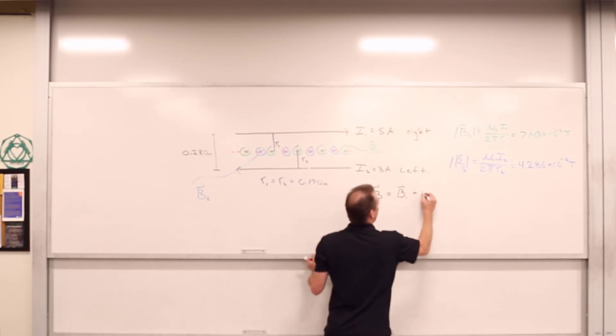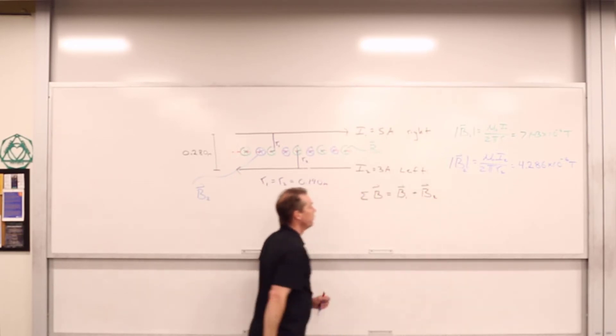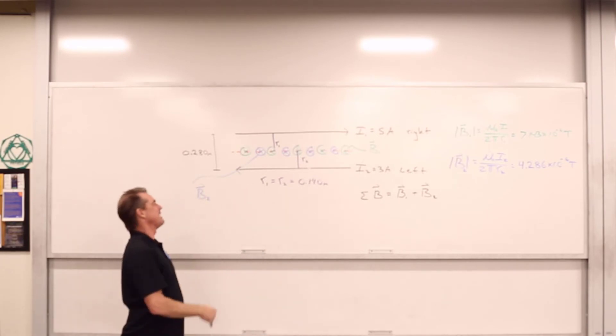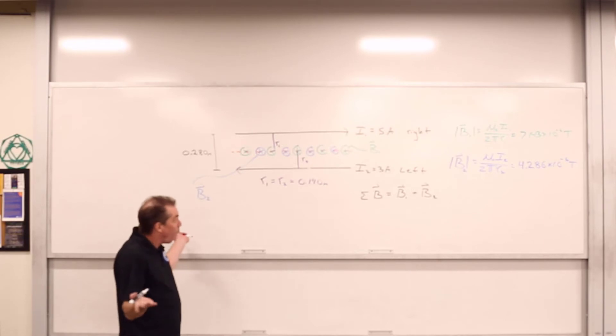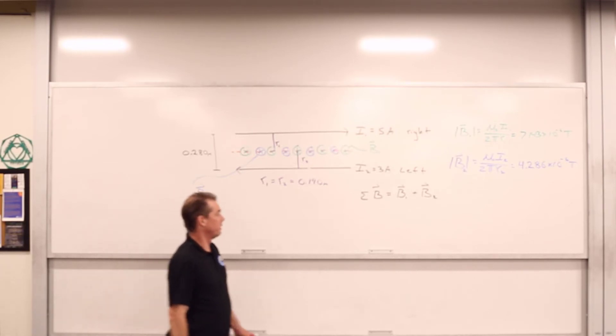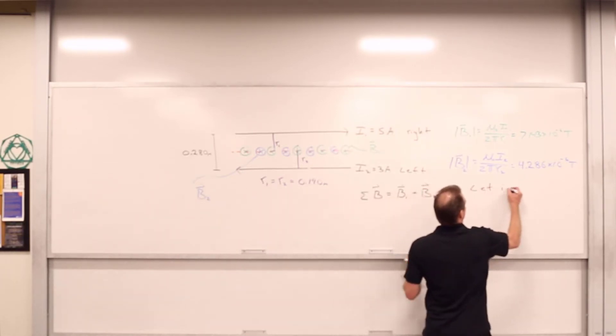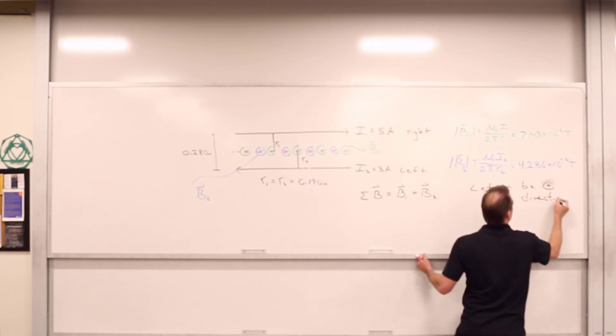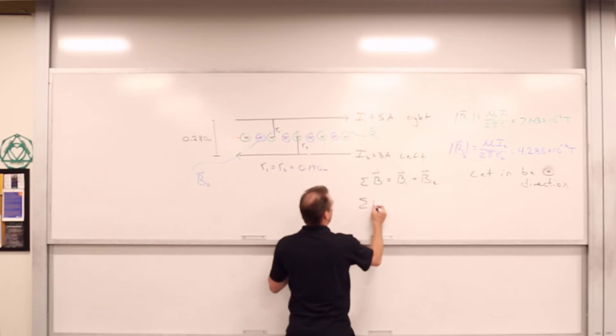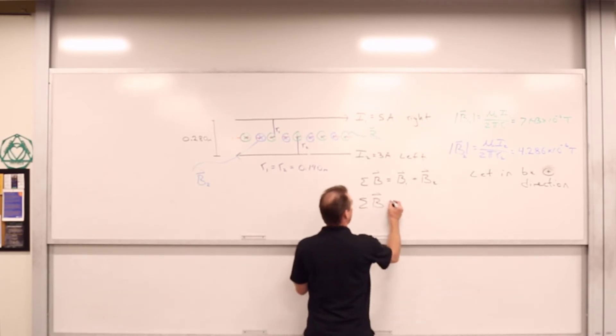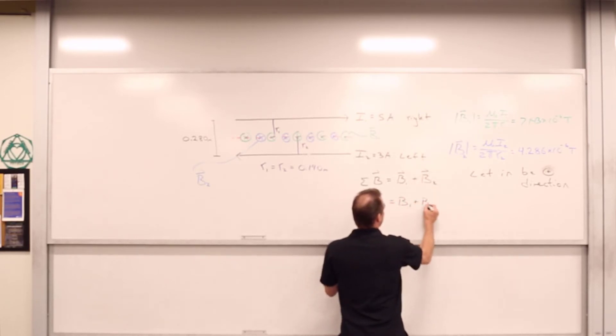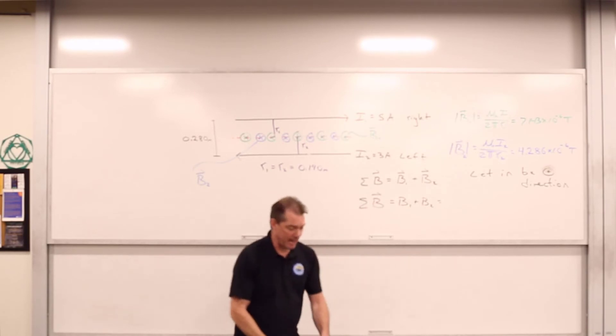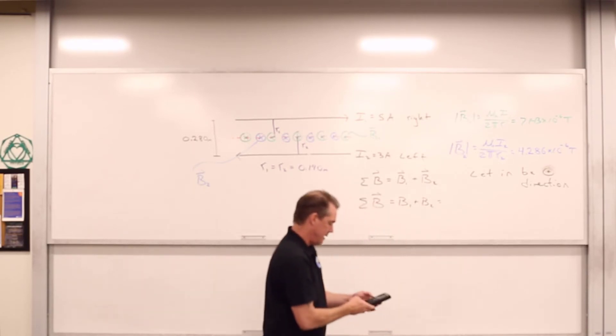That is going to be equal to B1 plus B2. In these particular cases, it's easiest to just one-dimensionalize things. The fields pointing in the same direction. So let's just say that in would be the plus direction. And thus we can write the net magnetic field is equal to B1, we'll call that plus because it's in, and B2, we'll call that plus because it's in. We'll just add up those two values there and we've got ourselves the field.